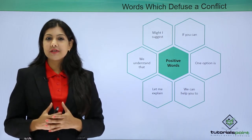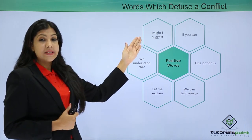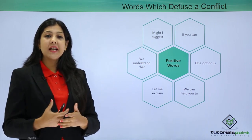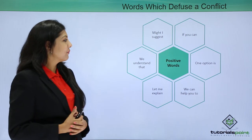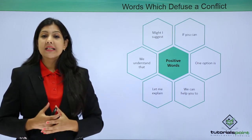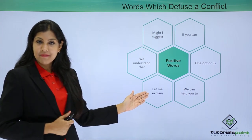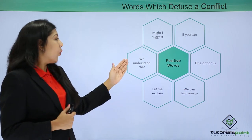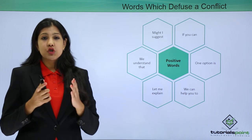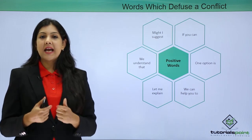We can counteract negative words by using positive words and phrases to help diffuse a conflict. Examples include: 'might I suggest we do this,' 'if you can do that, let's do that together,' 'one option is,' 'we can help you come to a consensus,' and 'let me explain that in a better manner.' The words and tone you use can either escalate a conflict or diffuse it at a very early stage.